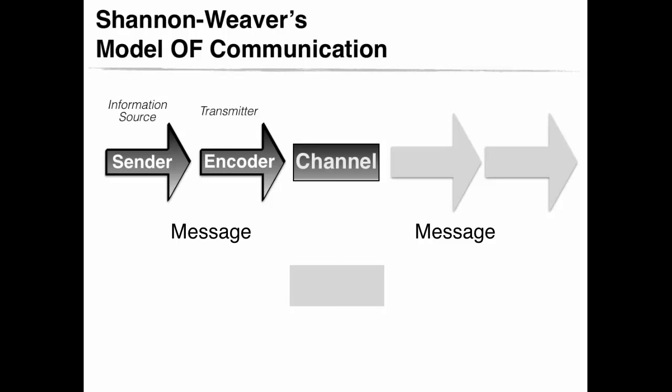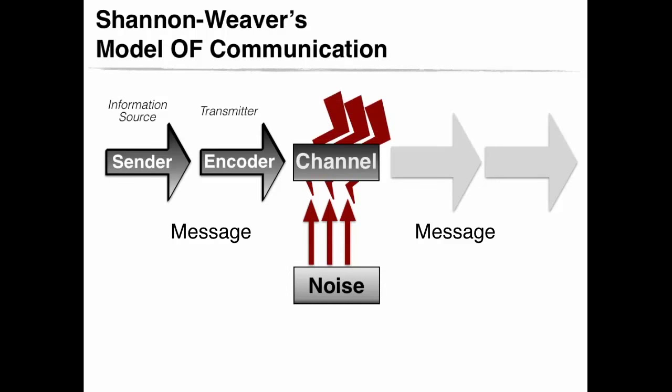As the message travels in a channel, noise comes into play. This noise is an interference or distortion that can modify the message being sent by the transmitter or the sender in such a way that it is misconstrued. Noise can be physical, semantic, pragmatic, or rhetoric.